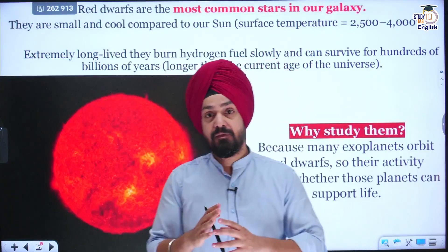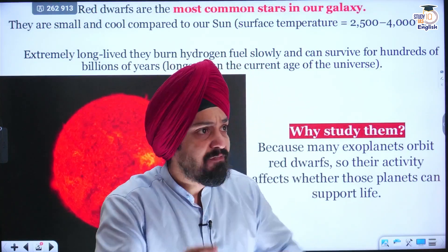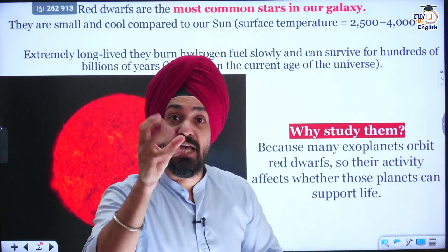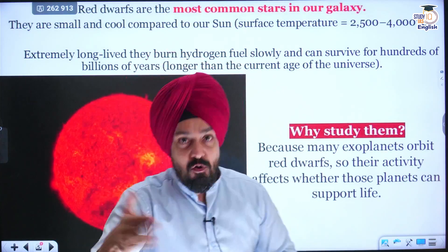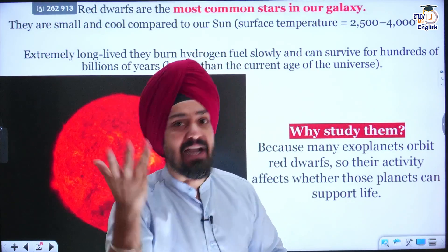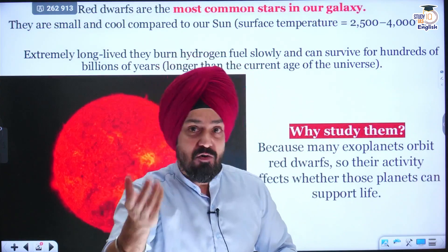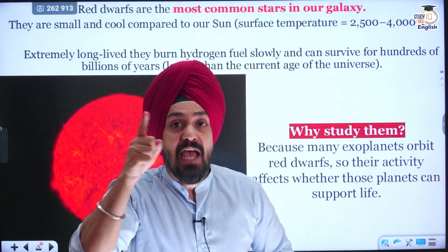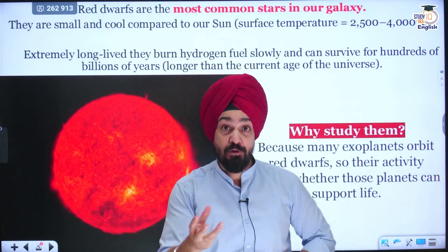Let us understand the difference between a red dwarf and our sun. In our solar system there is only one star. The difference is of size. Their formation is similar to the sun — they are formed out of nebula, which are clouds consisting of gases and dust particles. Red dwarfs and brown dwarfs are also formed from nebula. The difference between a red dwarf and our sun is of size, surface temperature, and age.